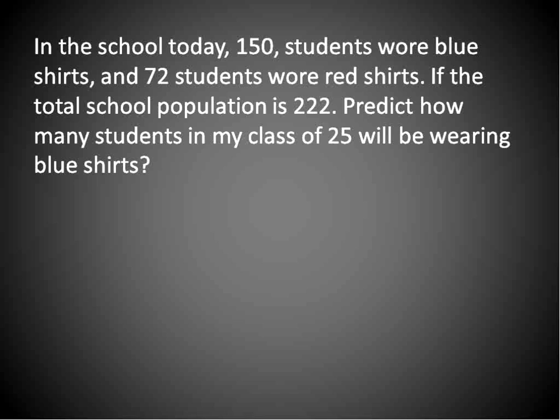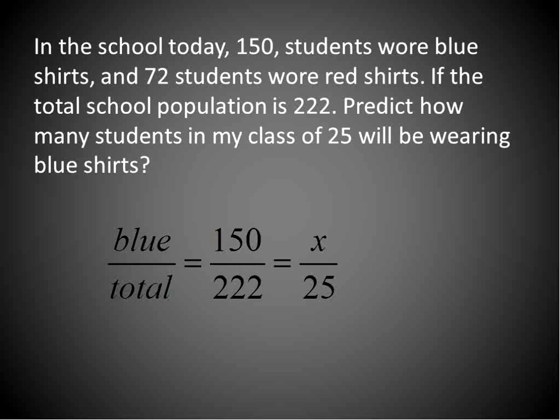In the school today, 150 students wore blue shirts and 72 students wore red shirts. If the total school population is 220, predict how many students in my class of 25 will be wearing blue shirts. In this example, everyone at school has either a blue shirt or a red shirt on, and I'm going to use that sample size of the entire school to make a prediction inside my classroom. Whenever you're setting up proportions, you need to be consistent — the top would be the blue and the bottom would be the total. So the total number of blue shirts: 150 out of 220 total students.